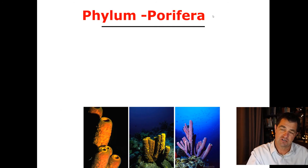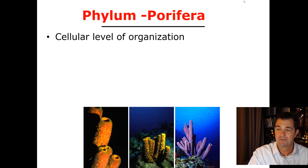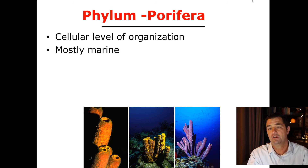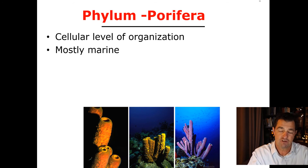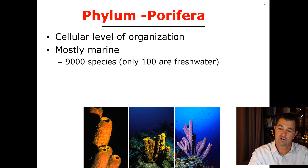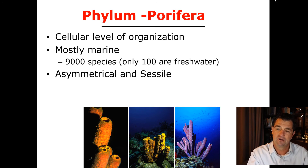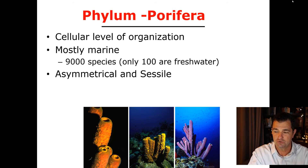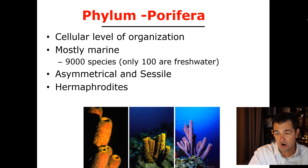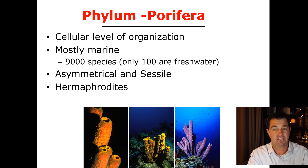Our first phylum is Phylum Porifera — the only animals with a cellular level of organization. They're almost entirely found in the ocean, with around 9,000 species and only about 100 in freshwater. They are asymmetrical, though sometimes radially symmetrical.